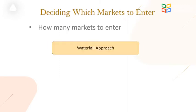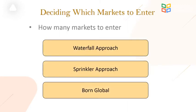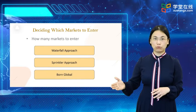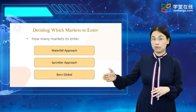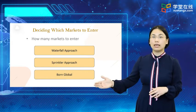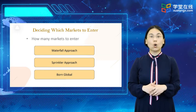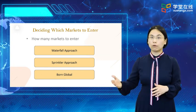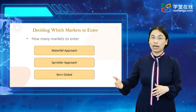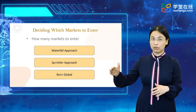The company must decide how many countries to enter and how fast to expand. Typical entry strategies are the waterfall approach — gradually entering countries in sequence — and the sprinkler approach — entering many countries simultaneously. Increasingly, firms, especially technology-intensive firms or online ventures, are born global and market to the entire world from the outset.